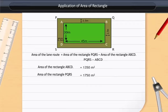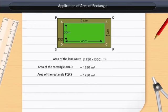Area of the lane route equals 1750 minus 1350, which equals 400 square meters.